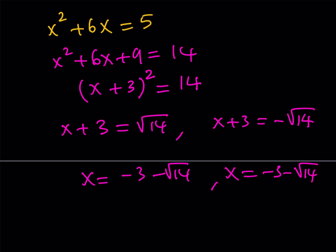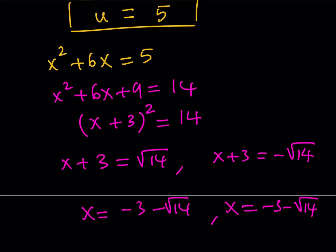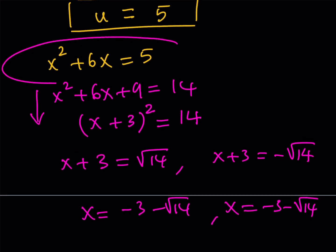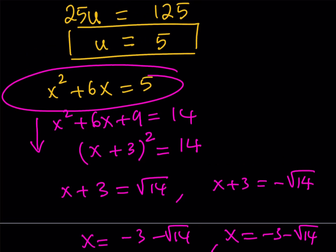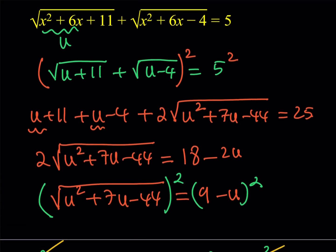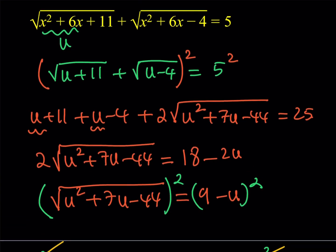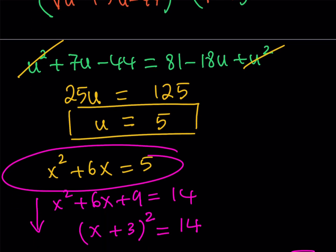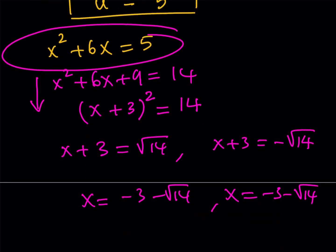Now we need to check these solutions. Substituting back into the original equation directly would be painful. Instead, since all steps are valid, we can substitute u equals 5 back: x squared plus 6x equals 5, so the first radical becomes square root of 5 plus 11, which is square root of 16, which is 4. The second radical becomes square root of 5 minus 4, which is square root of 1, which is 1. And 4 plus 1 equals 5 — it checks out. So our solutions are correct.